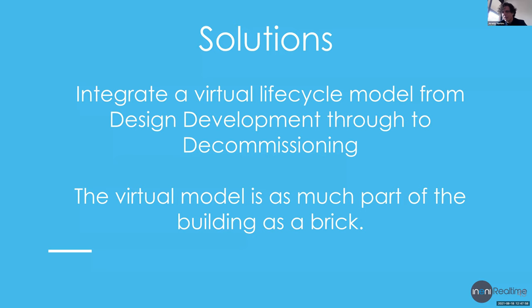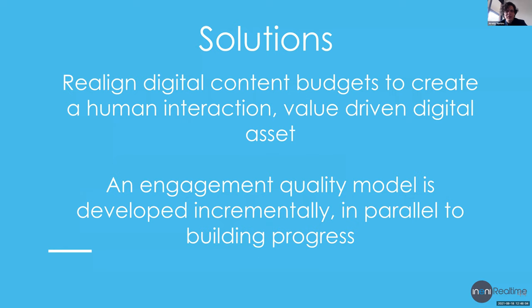We can realign our digital content budget to create a human interaction value-driven digital asset. Human interaction is really the key: digital information sitting on a hard drive not getting used is costing money and time and becomes a risk. It's about what is being touched, what is being looked at by humans — that's where our digital information has value. An engagement quality model is developed incrementally in parallel to the building process. Solving an issue on site is almost always the most cost-effective and quickest way.